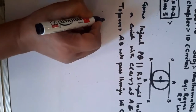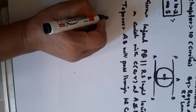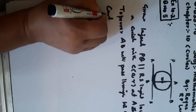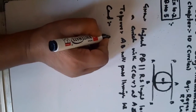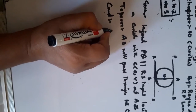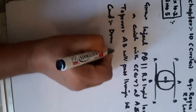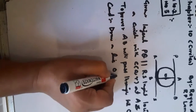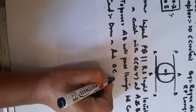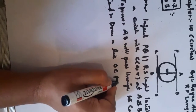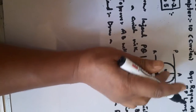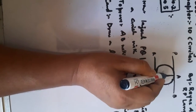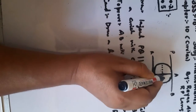Construction: From center O, draw a line OC parallel to RS.